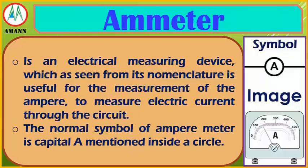Ammeter is an electrical measuring device which, as seen from its nomenclature, is useful for the measurement of amperes, to measure electric current through a circuit. The normal symbol of an ammeter is the capital letter A inside a circle in a circuit.